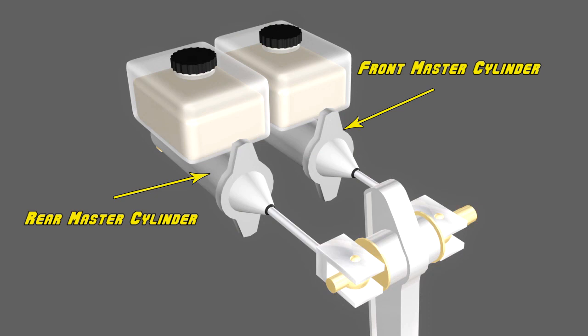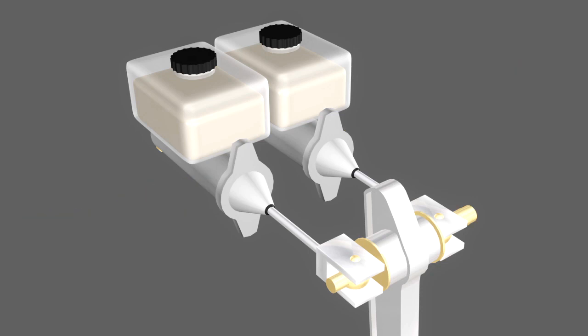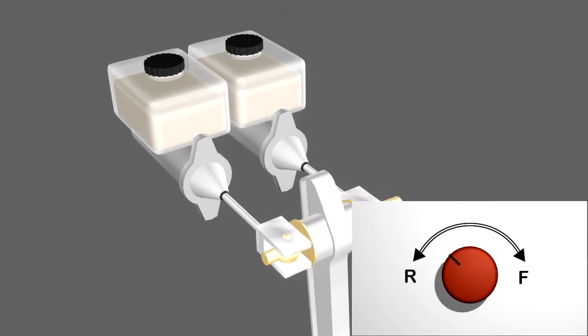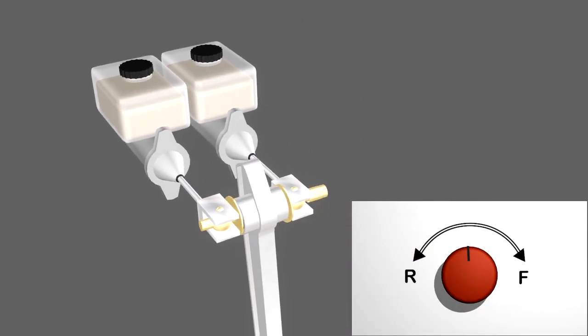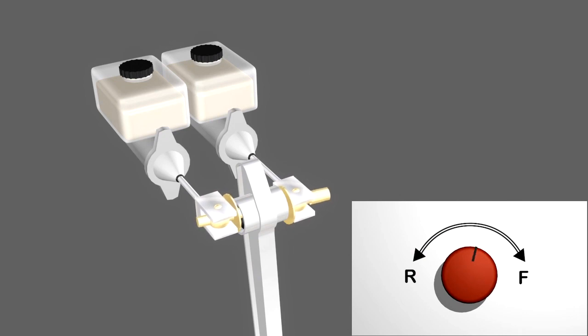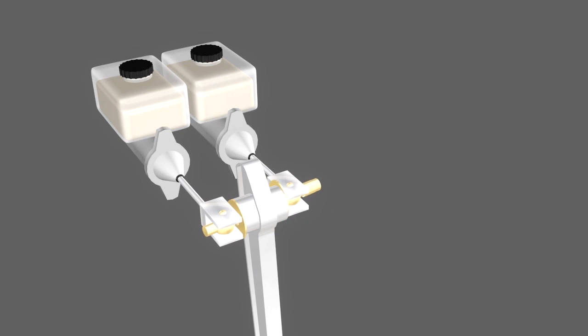As the driver depresses the brake pedal, a certain amount of pressure is applied to each of the master cylinders. The driver can adjust this pressure by turning a dial at his lower left in the cockpit, thereby sending more braking power to the front brakes versus the rear brakes.